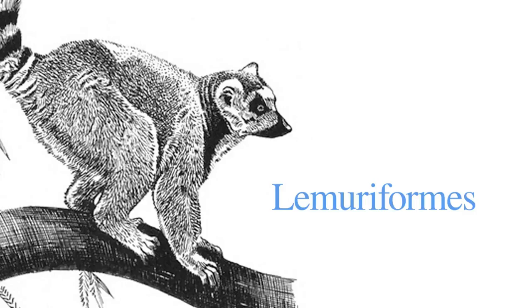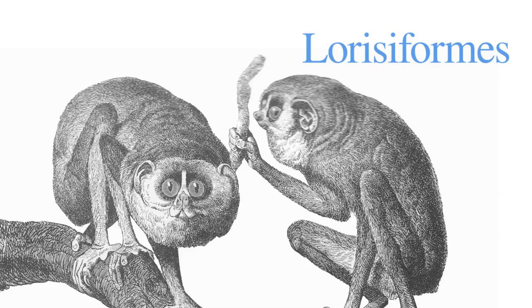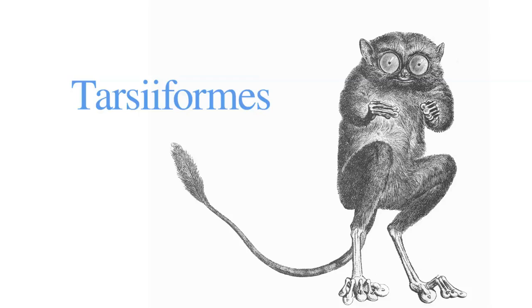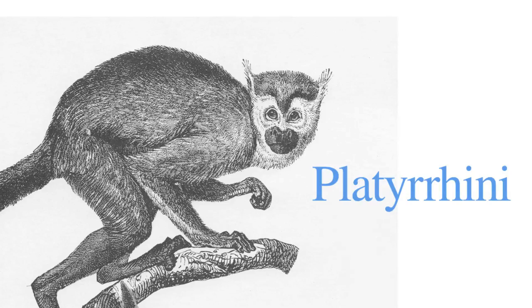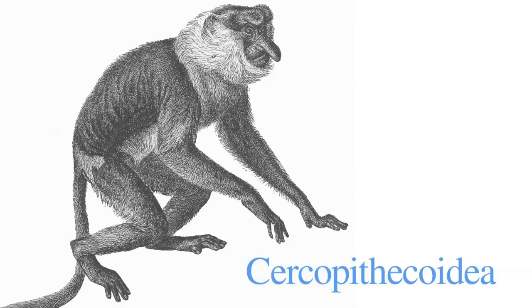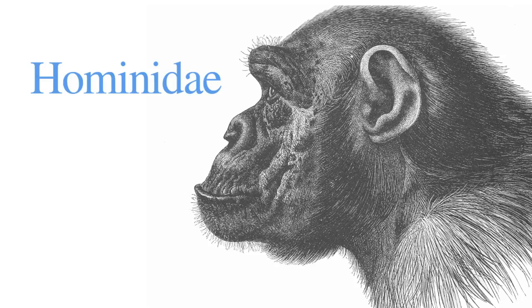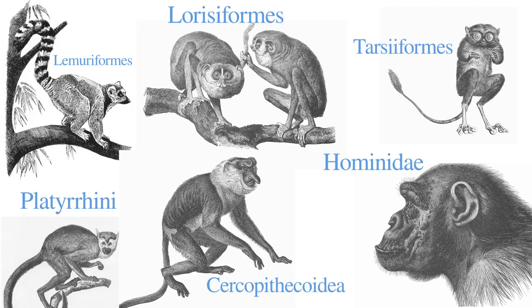In this series, we will be dividing the order into infra-orders and super-families — six groups. We will look at physical characteristics to help identify certain animals into these groups. Click through each video to see more.